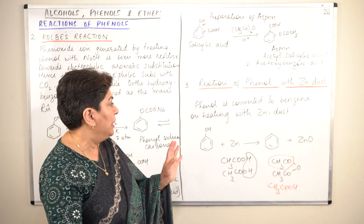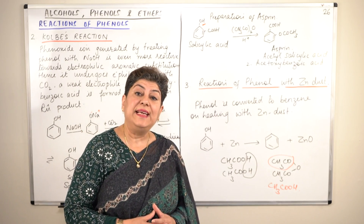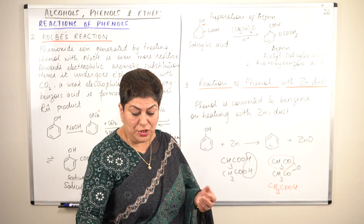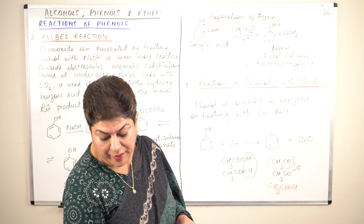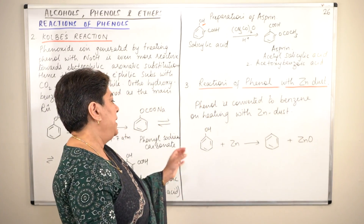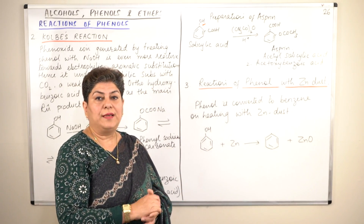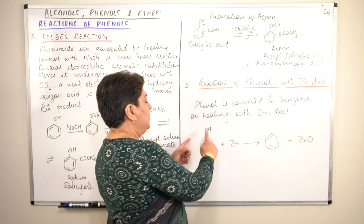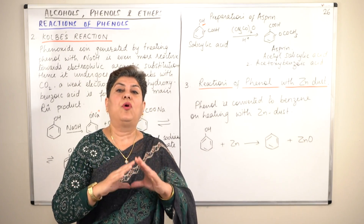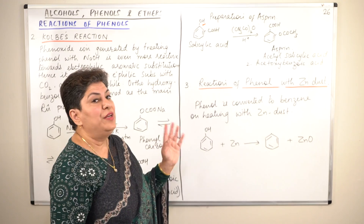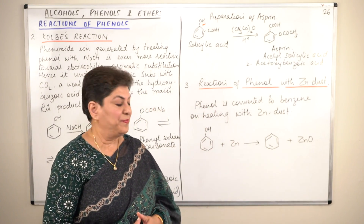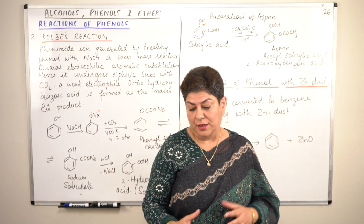Now we come to the reaction of phenol with zinc dust. When phenol reacts with zinc dust, all it does is remove the oxygen — it deoxygenates the molecule. Zinc takes away the oxygen to form ZnO, and hydrogen attaches itself to the benzene ring to form a regular benzene ring. So phenol, on heating with zinc dust, is converted into benzene.